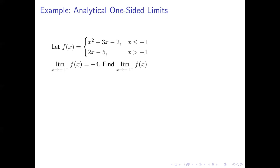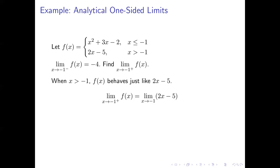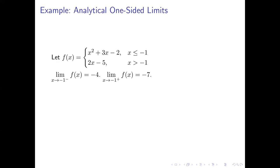Now for the limit as x approaches negative one from the right. Here we only consider values of x greater than negative one. As long as x is greater than negative one, our function behaves exactly like two x minus five. So this limit equals the ordinary limit as x approaches negative one of two x minus five, which we can also find by substitution. Calculating that value gives us negative seven. So the limit from the right as x approaches negative one of this function is negative seven.